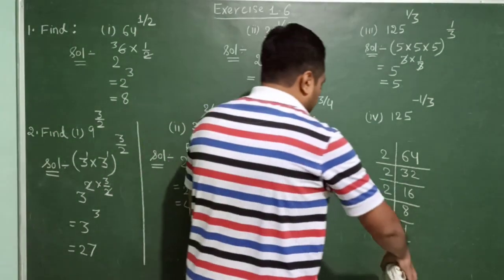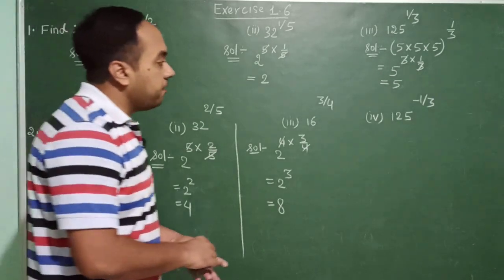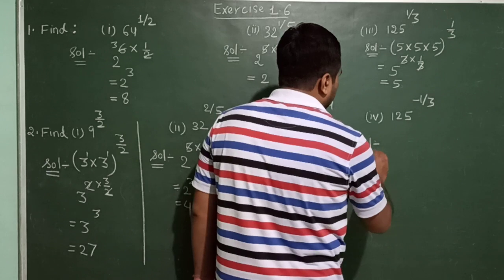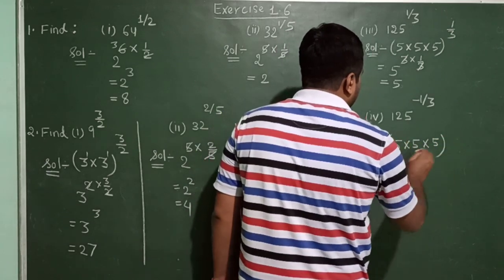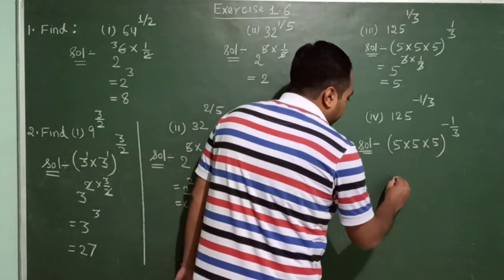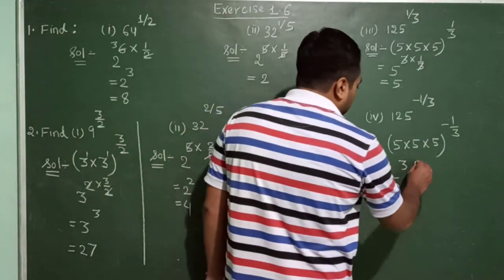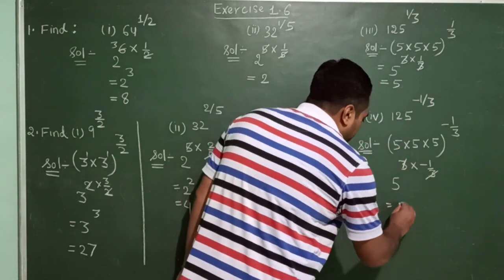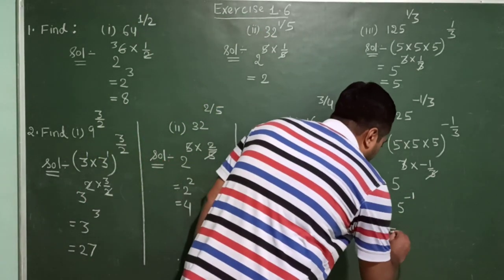The last one: 125 raised to the power minus 1 upon 3. We write 125 as 5 × 5 × 5. Since 5 is repeating itself 3 times, we write 5 raised to the power 3, and outside the power is minus 1 upon 3 — the 3s cancel, giving 5 raised to the power minus 1, or equivalently 1 upon 5.